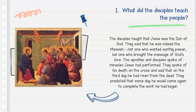Question number one: What did the disciples teach the people? The disciples taught that Jesus was the Son of God. They said that he was indeed the Messiah — not one who wanted earthly power, but one who brought the message of God's love. The apostles and disciples spoke of miracles Jesus had performed, his death on the cross, and said that on the third day he had risen from the dead. They predicted that someday he would come again to complete the work he had begun.